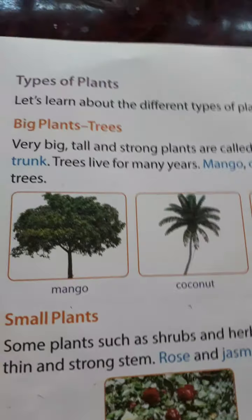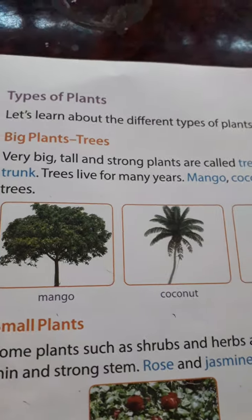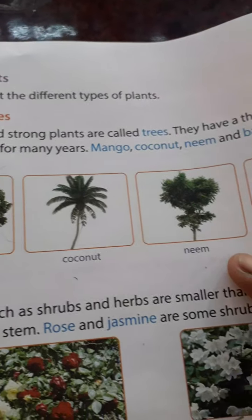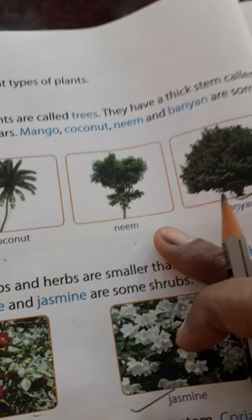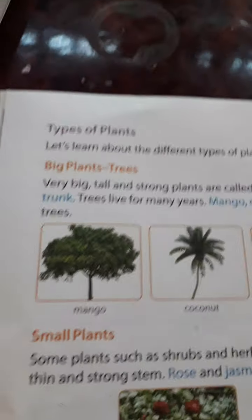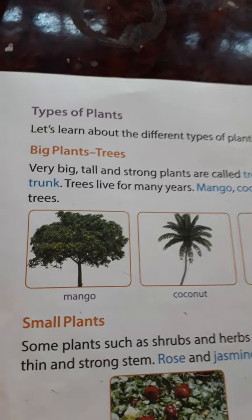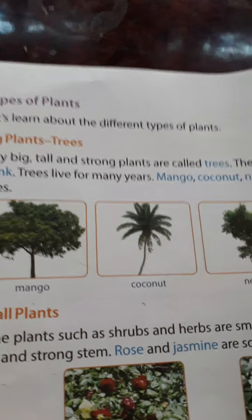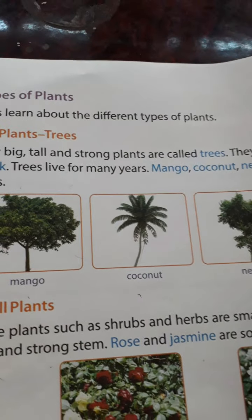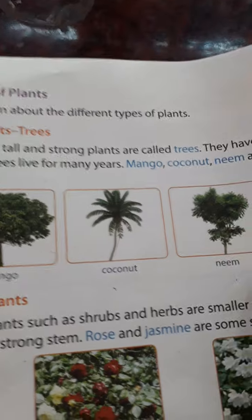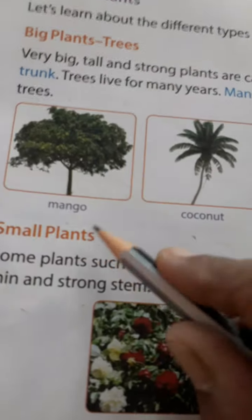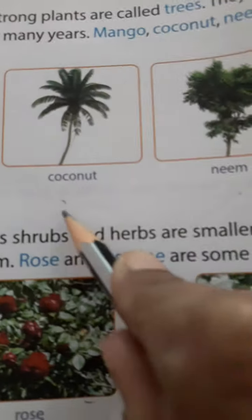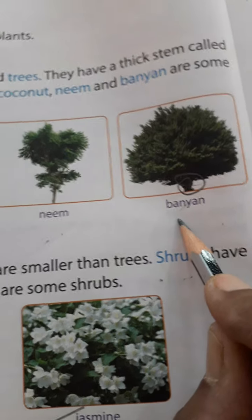Big, tall, and strong plants are called trees. They have a thick stem called a trunk. A thick, brown, strong, woody stem is known as a trunk. Trees live for many years. Mango, coconut, neem, and banyan are examples of trees.